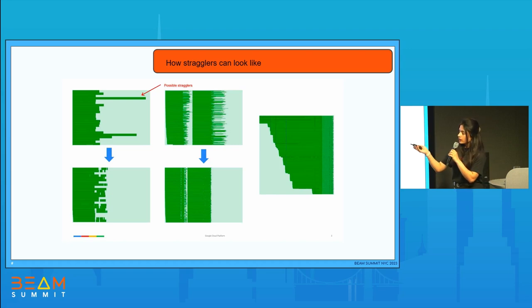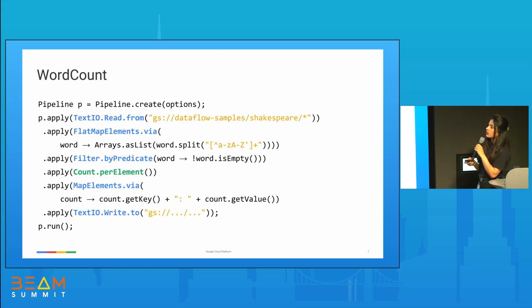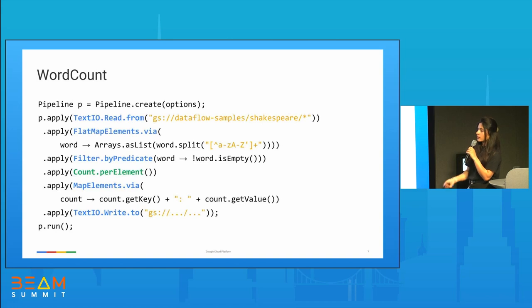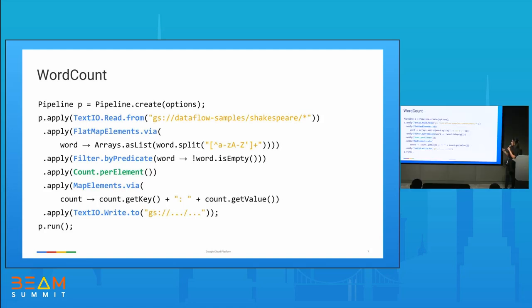This is pretty much the hello world of Beam, where you can see it's reading from the Shakespeare corpus, reading based on every word, applying a filter, then there is an aggregate function, and then writing back to a file. The purpose of this example is that there are two functions — the blue ones are basic shards that can be parallelized across different work items, and then there's a basic aggregation function after a shuffle stage where all elements for every key are aggregated.